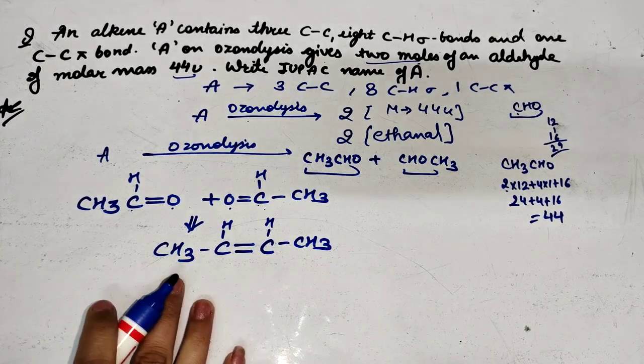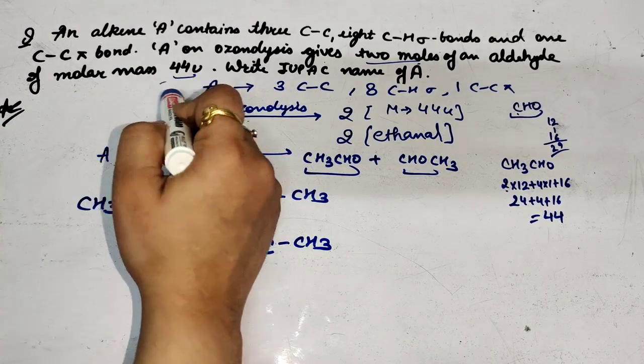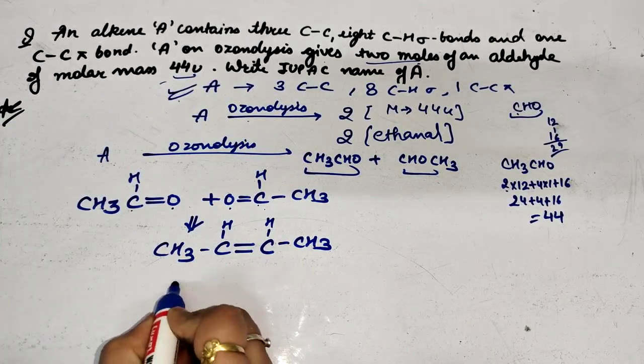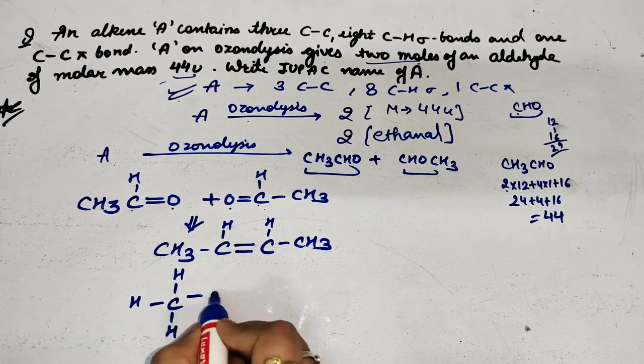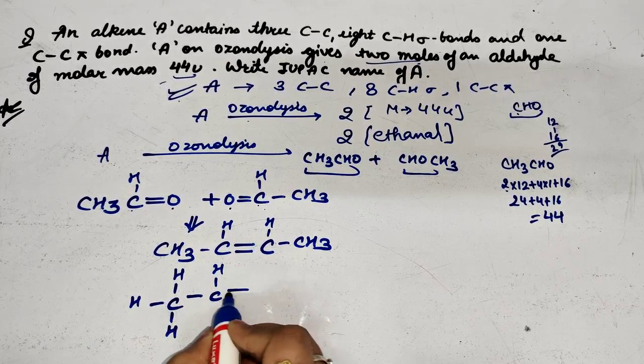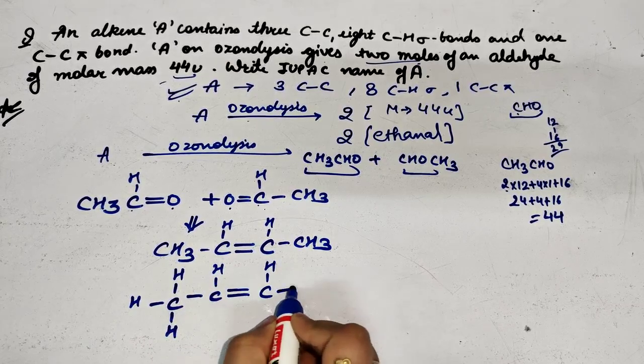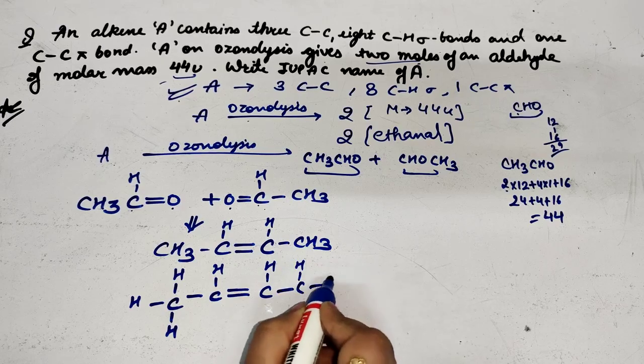Now let's expand it more to make the structure line clear. We can write CH3 like this: CH double bond CH, CH, CH3.